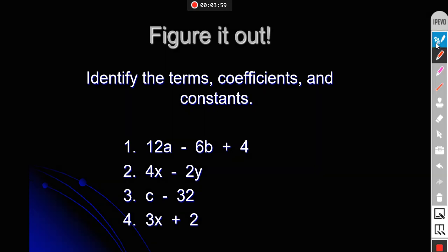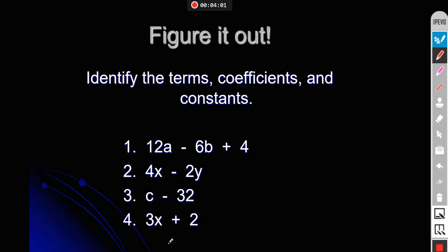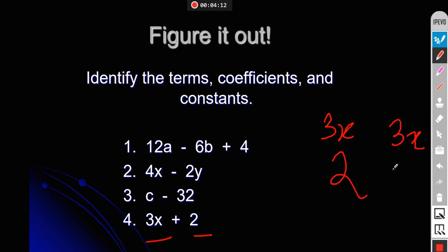The next expression is 3x plus 2. These are two terms. 3 is the coefficient because it is multiplied with the variable x. 2 is the constant, and plus is the operator.